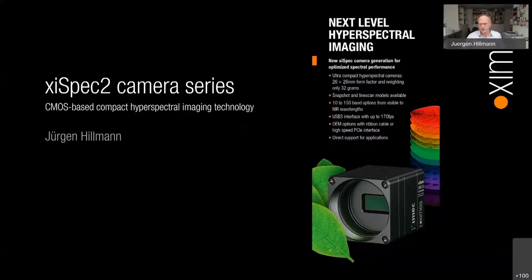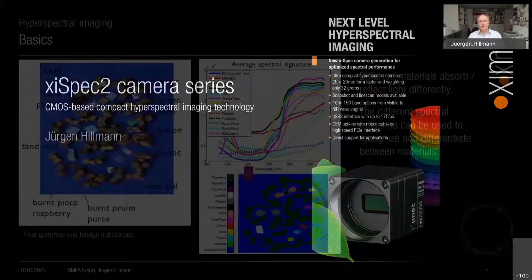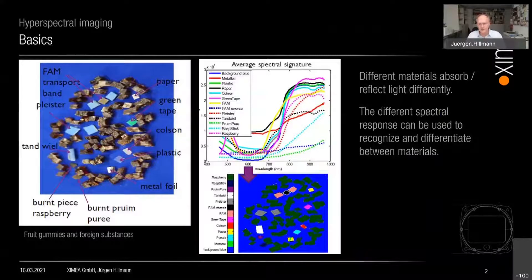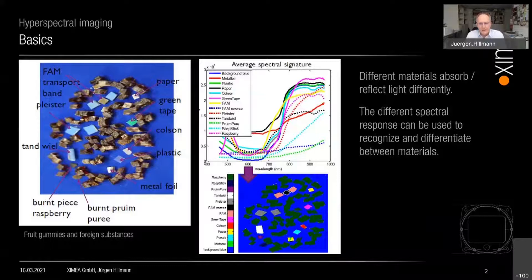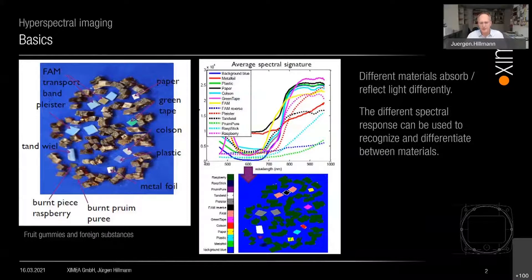The first pictures — some of you have already seen them — are just to give an intro about the idea behind hyperspectral imaging. Materials absorb light differently. The absorption or reflectance curves in relation to the wavelength of the light are different for different materials. The idea is to use these different spectral responses to recognize or differentiate materials in a probe — in this case, fruit gums and foreign substances, which can be differentiated with this technology.